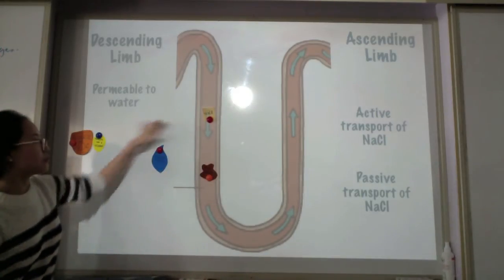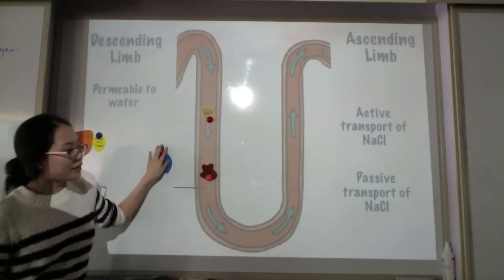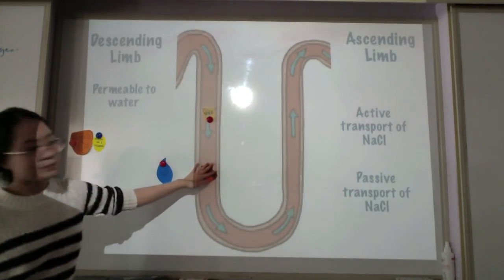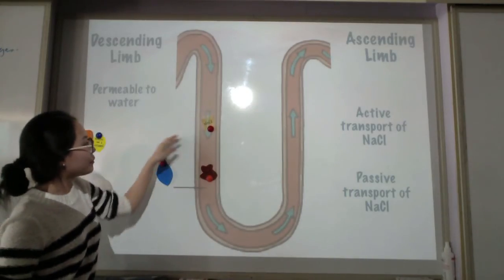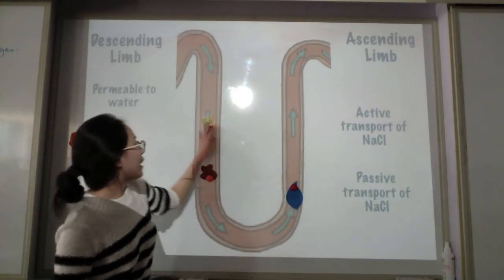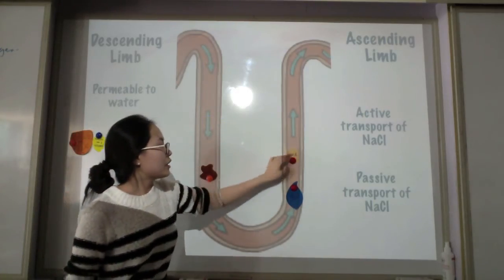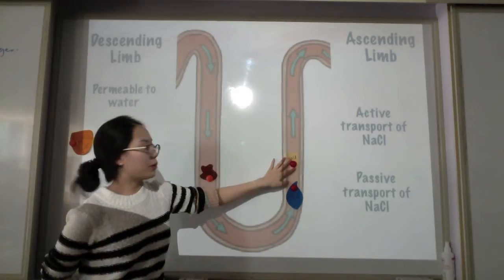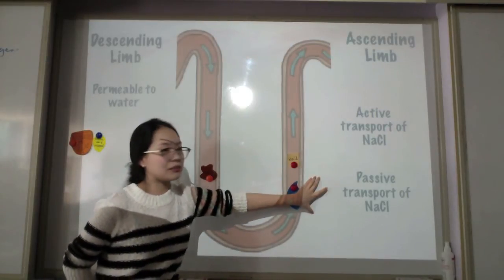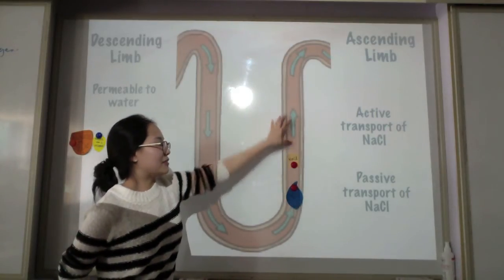And then as you move down to the ascending limb there's still water left. But then in the ascending limb it's only permeable to NaCl. So also there's passive transport in the bottom part and active transport.